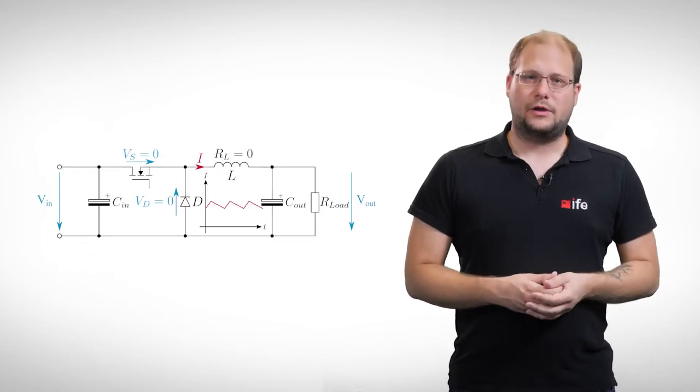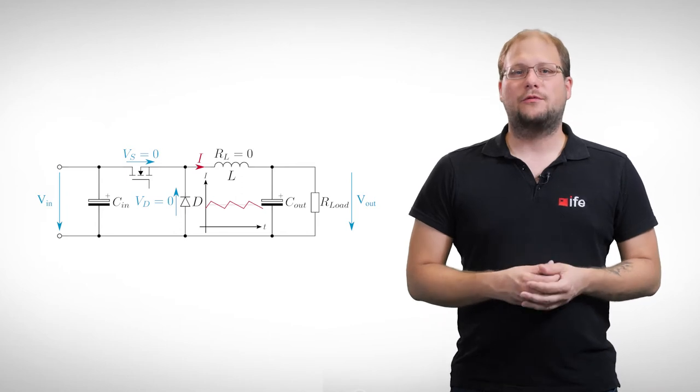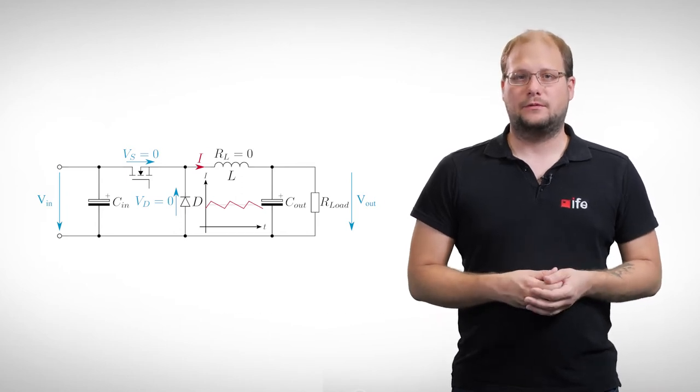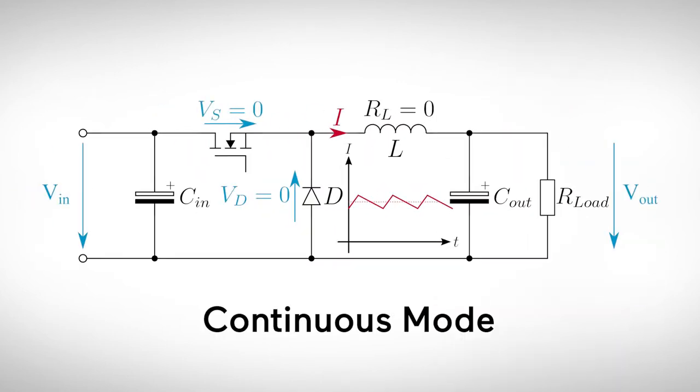There are two modes of operation. We want to start with the so-called continuous mode. Generally speaking, this is the normal mode of operation, which means there is a load attached to the power supply and the current through the inductor never becomes zero. In the following calculations, we want to neglect the voltage drop over the transistor and the flyback diode.